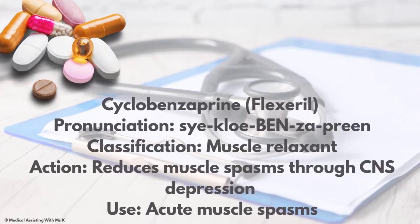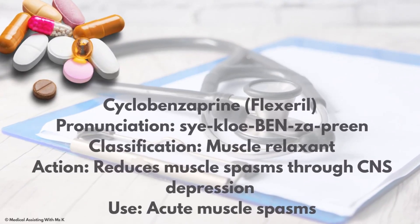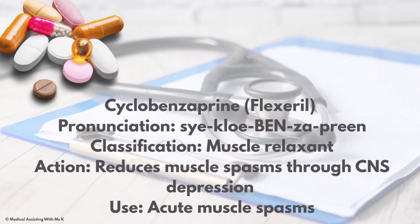Flexeril — the generic is cyclobenzaprine. Classification: muscle relaxant. Action: it reduces muscle spasms through central nervous system depression. Use: acute muscle spasms.